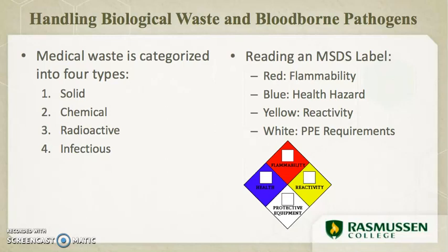MSDS sheets should always be available to all employees and easily accessible. In our lab, it is found with the other manuals in the back corner near the artificial arms. The MSDS label is broken down into four color-coded categories: red for flammability, blue for health hazard, yellow for reactivity, and white for PPE requirements or other information. Bloodborne pathogens were covered extensively in Module 2, so review Chapter 6 if you have questions and bring them to the lab class.